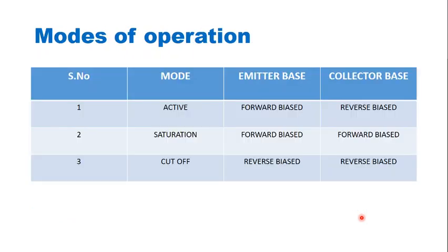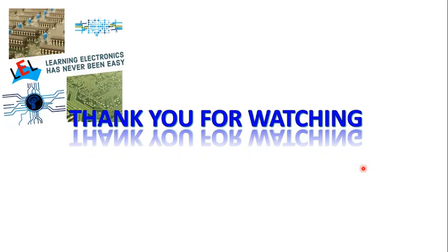Let us see these three regions in tabular form. In active mode: emitter-base junction is forward biased, collector-base junction is reverse biased. In saturation mode: both junctions are forward biased. In cutoff mode: both junctions are reverse biased. That's all for today on BJT basics. Thank you for watching.